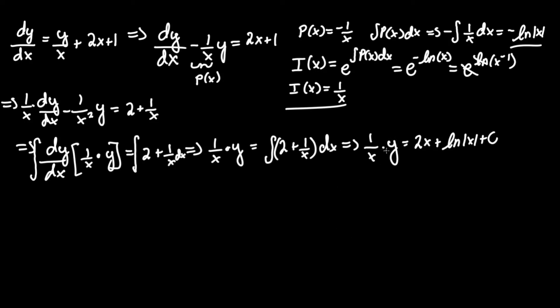Now isolate y by multiplying everything by x. This gives y equals 2x squared plus x ln absolute value of x plus cx. The c doesn't become just c again because c can only absorb constants and x is a variable. The answer is y equals 2x squared plus x ln x plus cx.